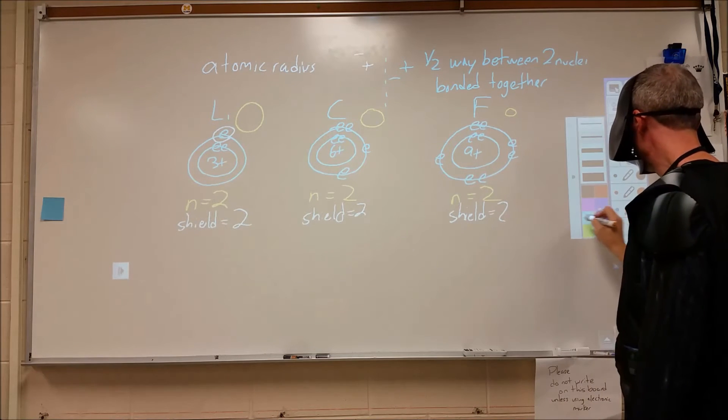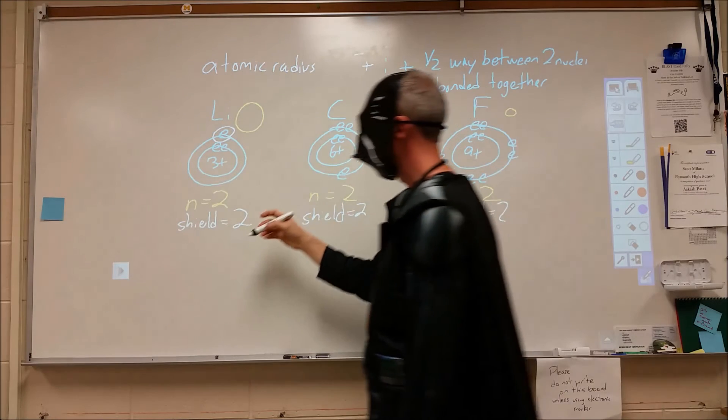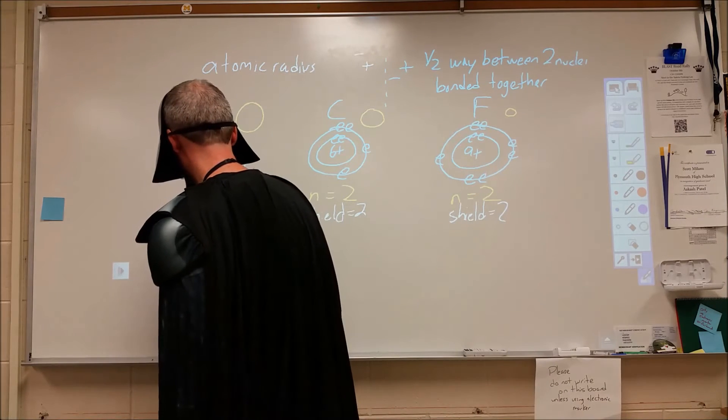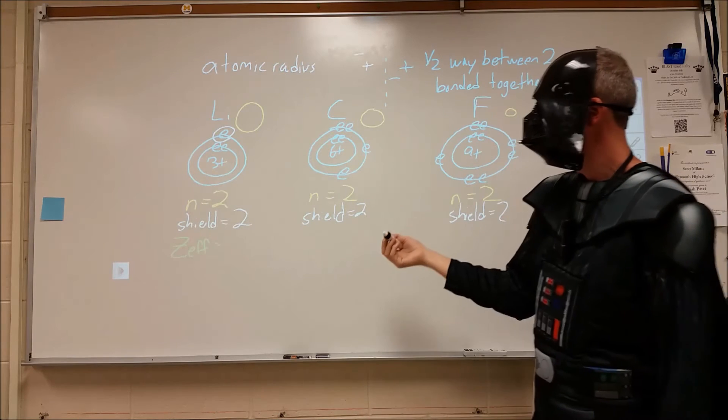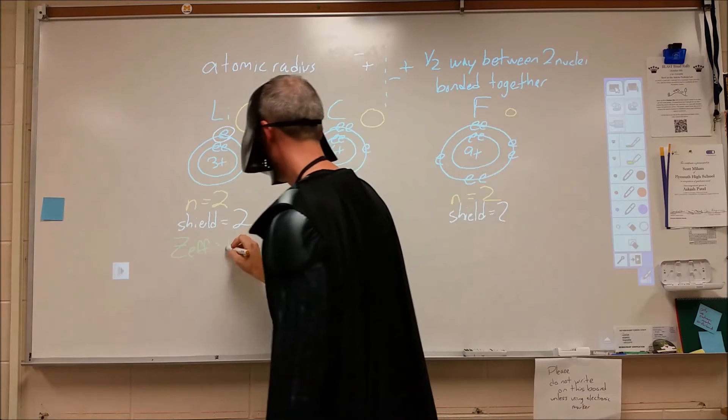We combine shielding with the protons, and we can come up with an effective nuclear charge. So our effective nuclear charge here for lithium would be three minus the two shielding electrons for a total of plus one.